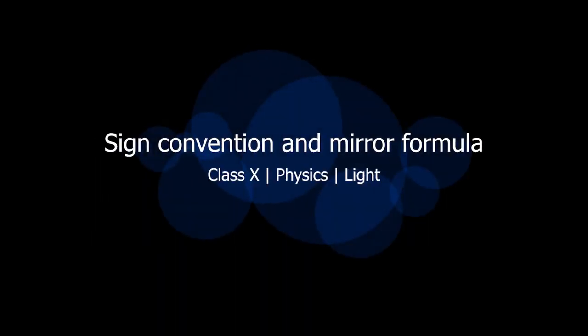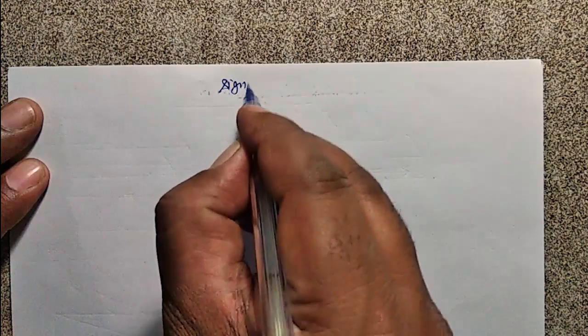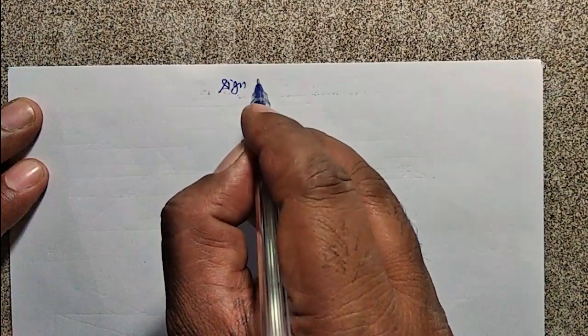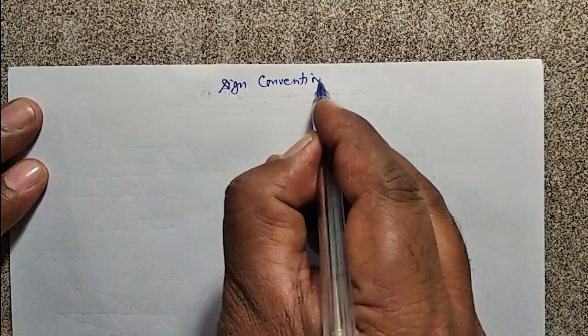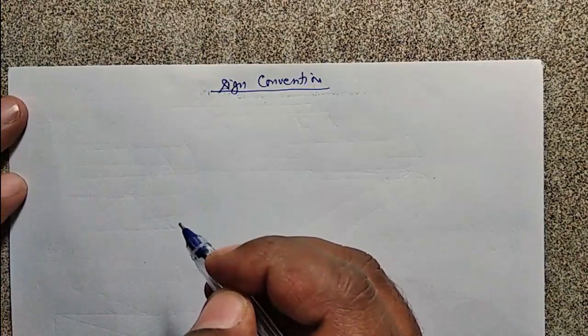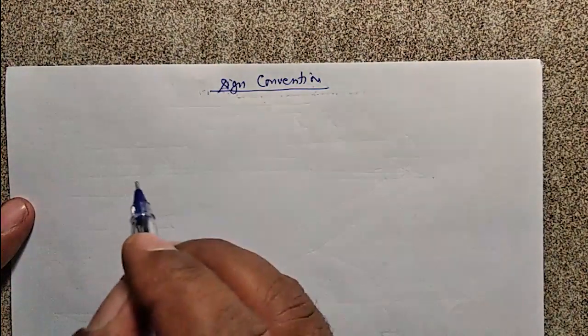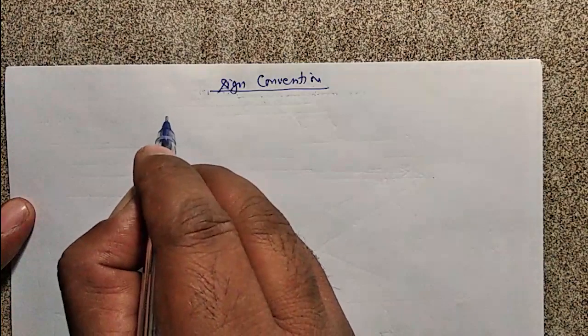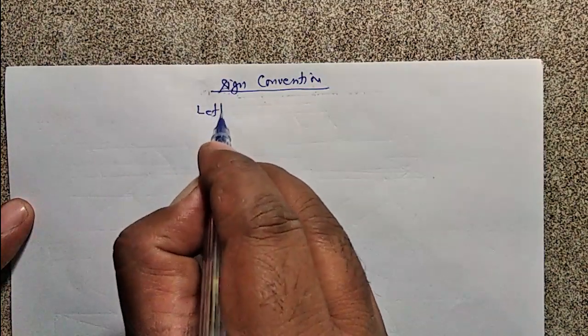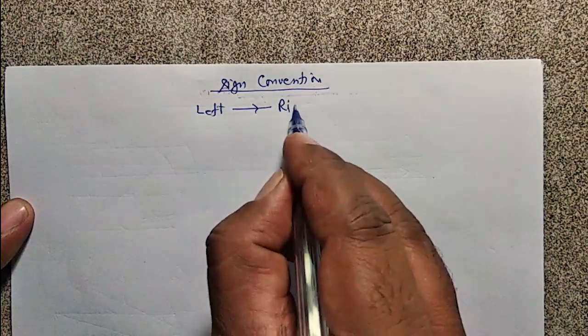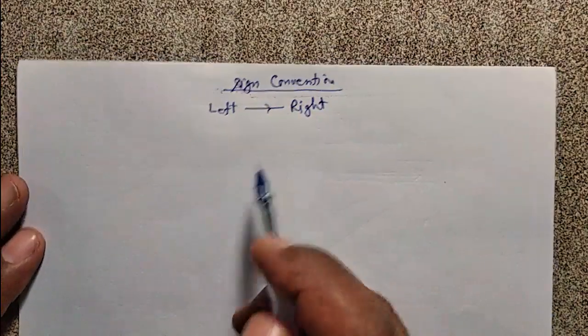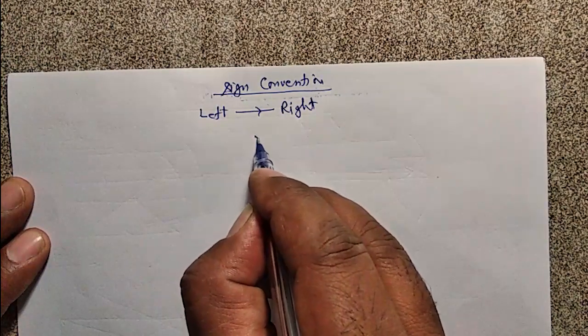In this video we will study the sign convention, which is very important in solving numericals. There are a few rules for the sign convention. First rule: the rays should always travel from left to right. This is a concave mirror — rays always travel from left to right.